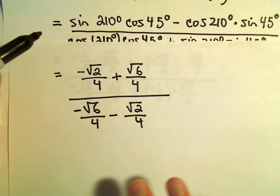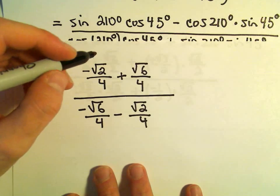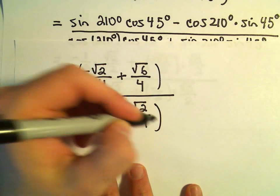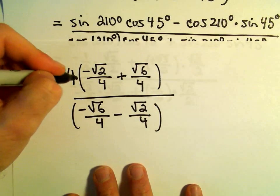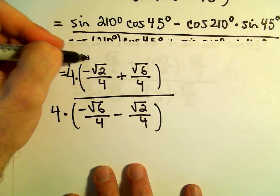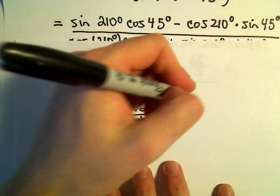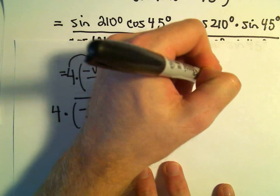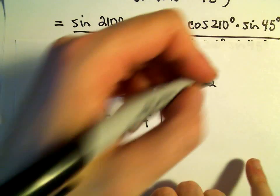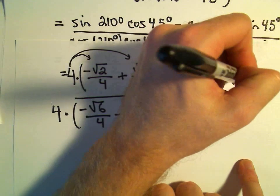We would like to clean this up a little bit. Probably the easiest thing is just to get rid of the fractions. We can multiply the numerator and the denominator by 4. When we distribute it to the first term, the 4s will cancel, leaving us with negative root 2. When we distribute it to the second term, the 4s will cancel, so we'll have positive root 6.